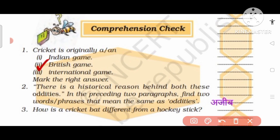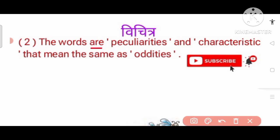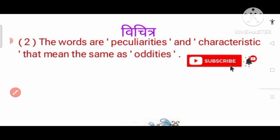Question number 2: There is a historical reason behind both the oddities. Oddities ka matlab hota hai anukha pan, vichitrata. In the preceding two paragraphs, find two words or phrases that mean the same as oddities. Answer: The words are 'peculiarities' and 'characteristics' that mean the same as oddities.